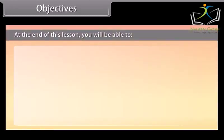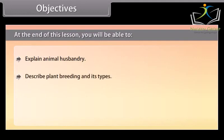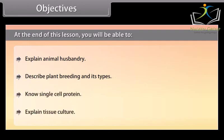At the end of this lesson, you will be able to: explain animal husbandry, describe plant breeding and its types, single cell protein, and explain tissue culture.